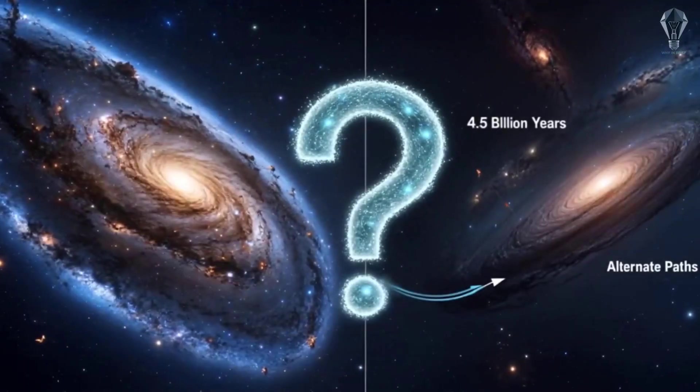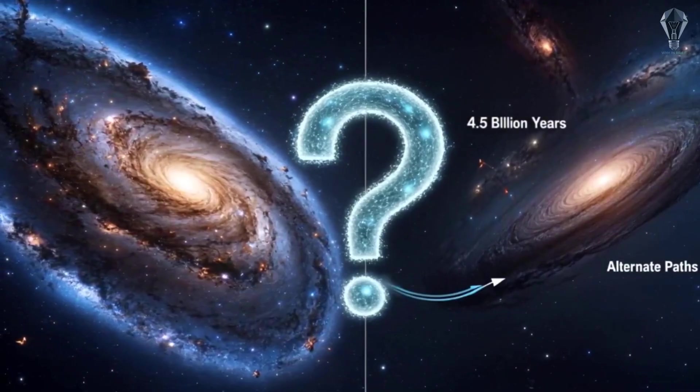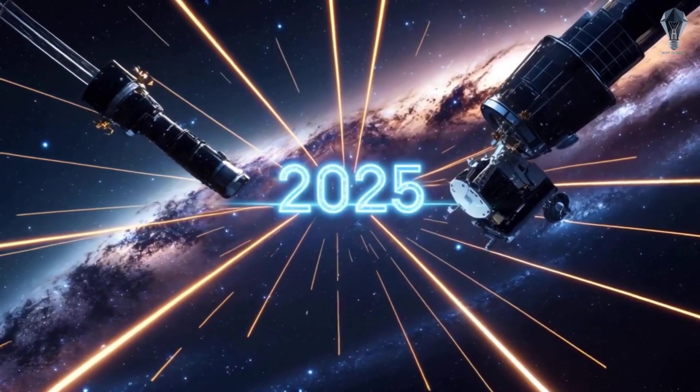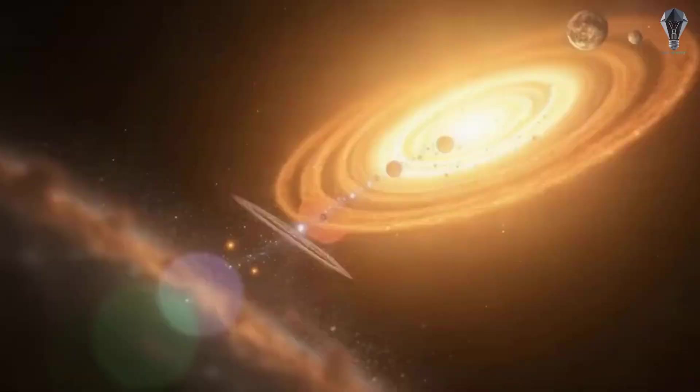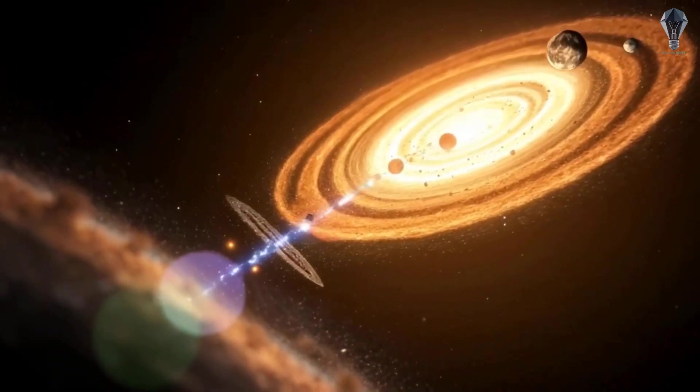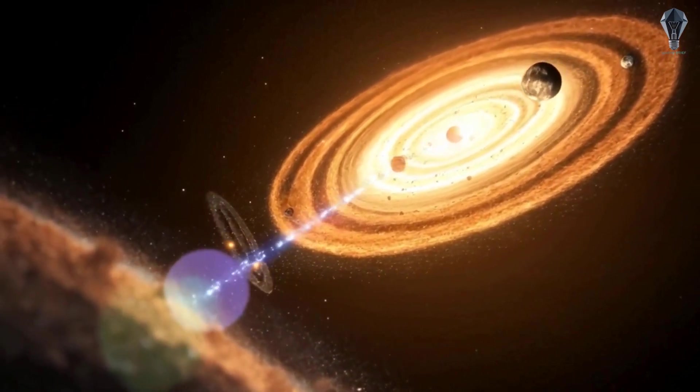Remember that certain head-on collision with Andromeda in 4.5 billion years? Well, hold on. Fresh 2025 research using Hubble and Gaia data suggests the odds of that epic merger in the next 10 billion years are now just 50-50. A coin flip. What changed?